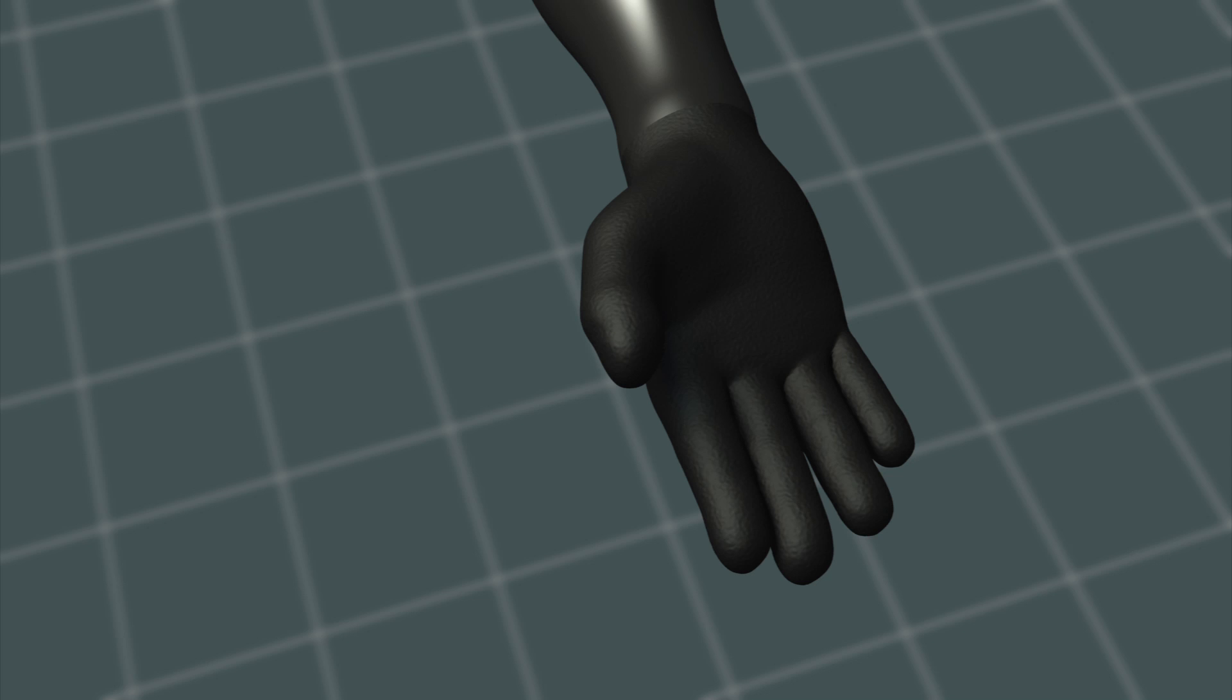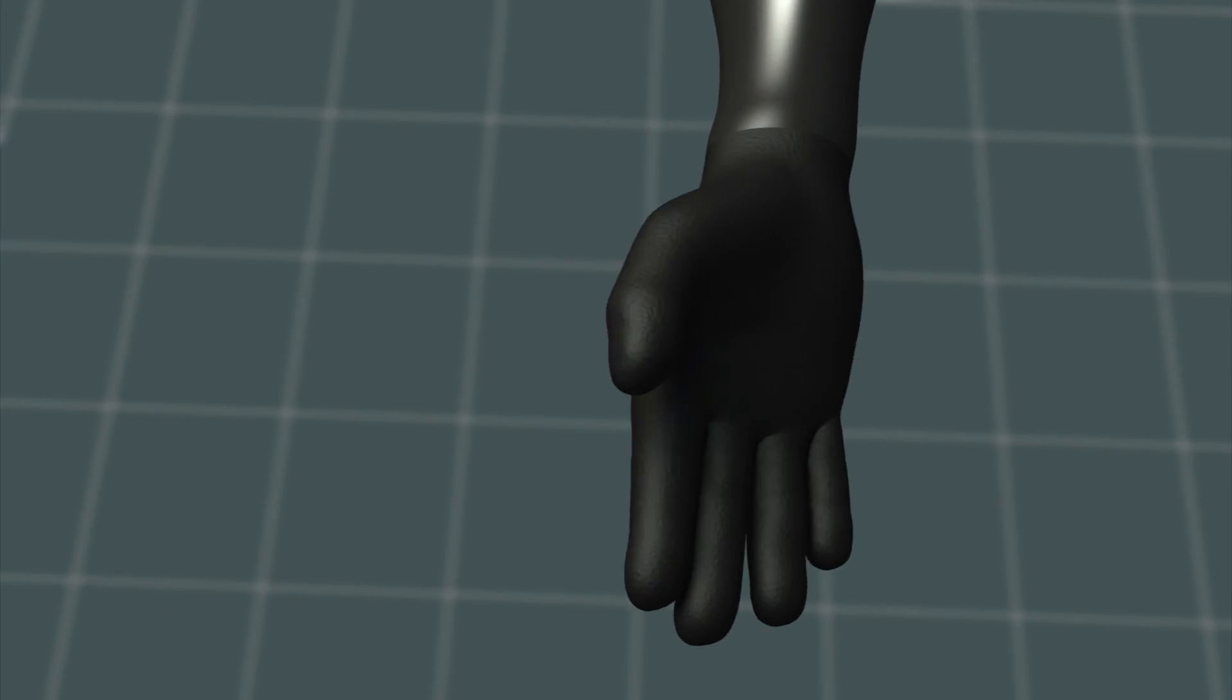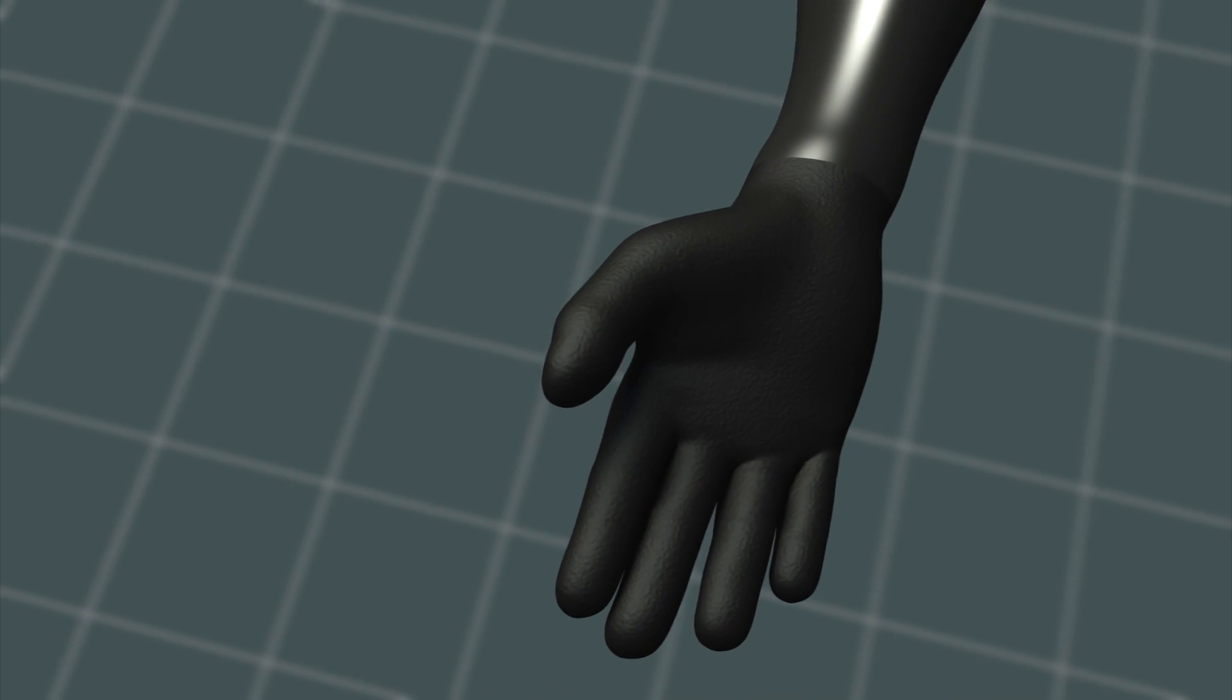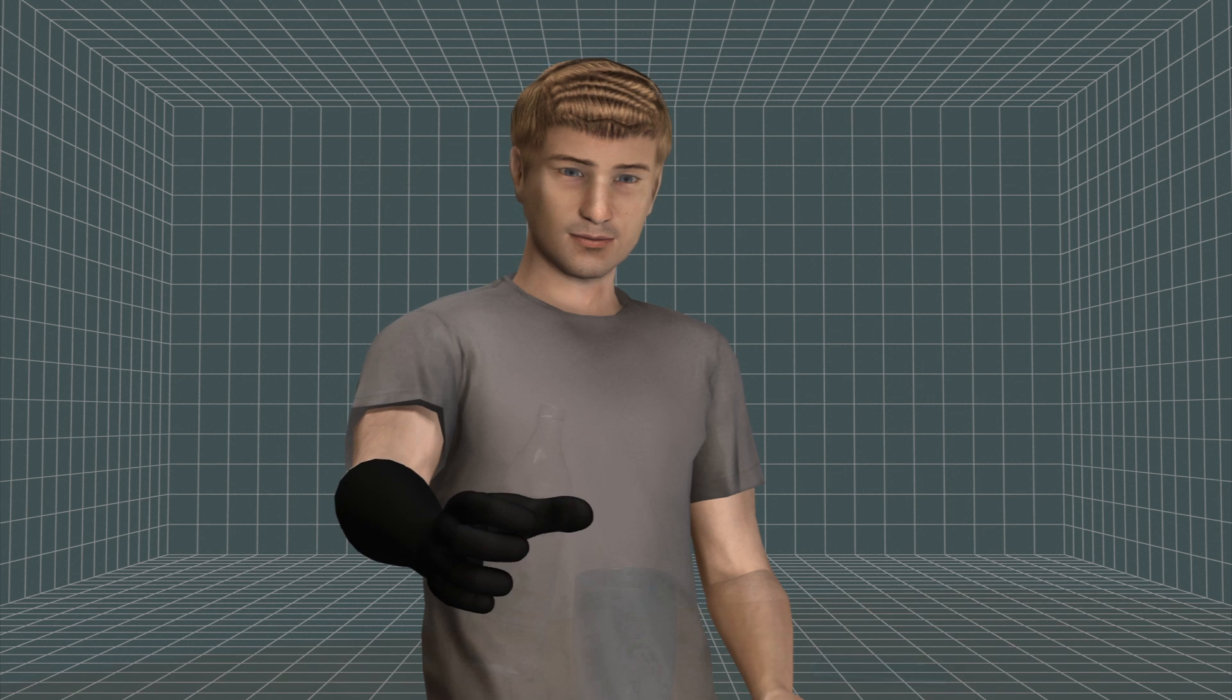The system allows for three degrees of movement: opening and closing of the hand, rotation of the wrist 180 degrees clockwise and counterclockwise, and lateral movement of the thumb, allowing the patient to easily perform daily tasks.